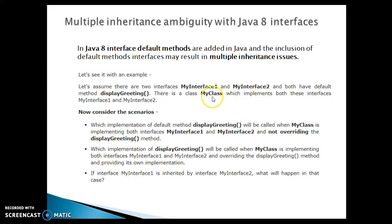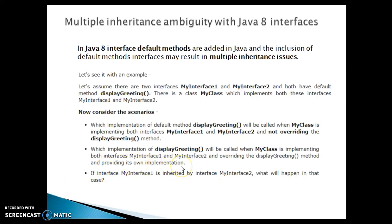The first scenario is: if my class does not override the display greeting method, then which method is going to be inherited? The second scenario is: which implementation of display greeting will be called when my class implements both interfaces, interface one and interface two, and overrides the display greeting method, providing its own implementation?